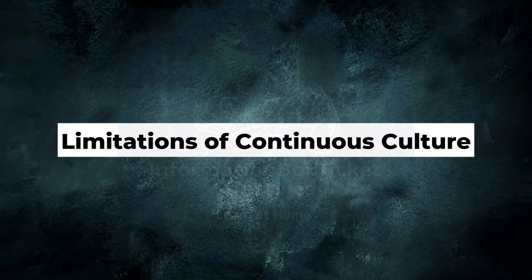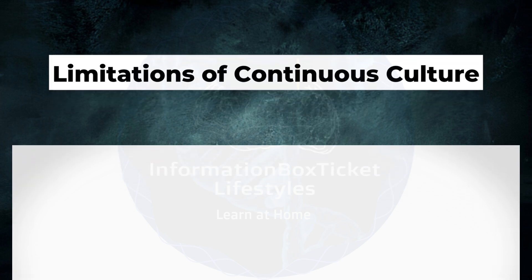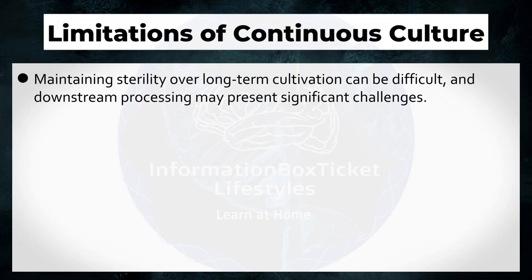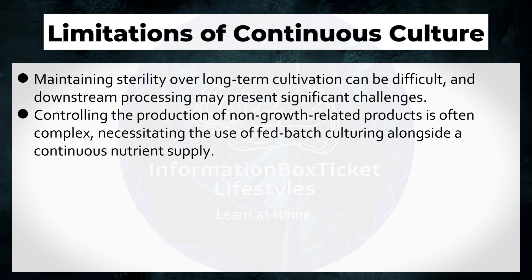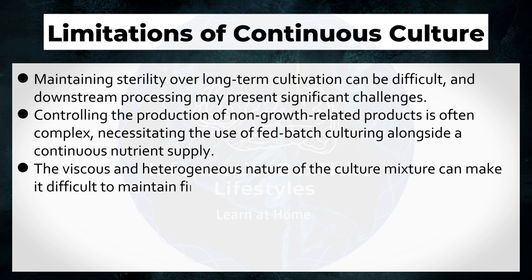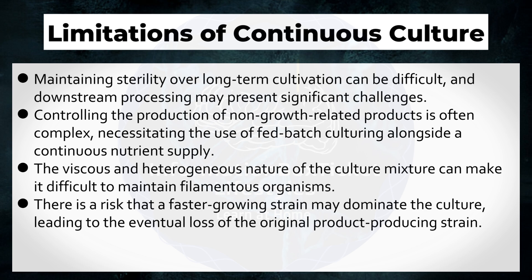Limitations of Continuous Culture. Maintaining sterility over long-term cultivation can be difficult, and downstream processing may present significant challenges. Controlling the production of non-growth-related products is often complex, necessitating the use of fed-batch culturing alongside a continuous nutrient supply. The viscous and heterogeneous nature of the culture mixture can make it difficult to maintain filamentous organisms. There is a risk that a faster-growing strain may dominate the culture, leading to the eventual loss of the original product-producing strain.